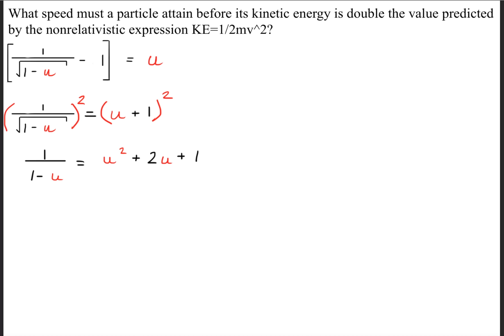Afterwards, I'll cross multiply. So now I have this quadratic and I multiply it by this binomial right here. I'll expand that out so that I get 1 is equal to u squared minus u cubed plus 2u minus 2u squared plus 1 minus u. If I simplify this all down, I'll get minus u cubed minus u squared plus u is equal to 0.